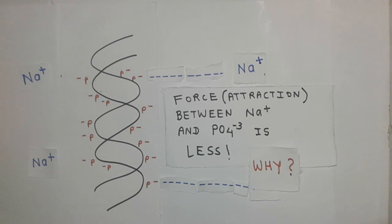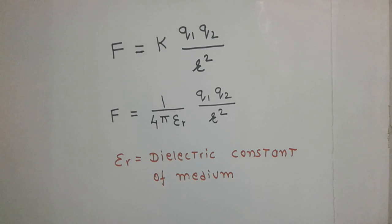Why? Let's see Coulomb's law. F equals K Q1 Q2 by R squared. Epsilon R is known as the dielectric constant.